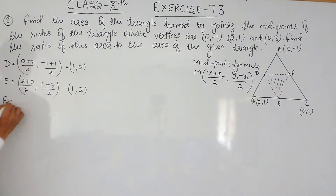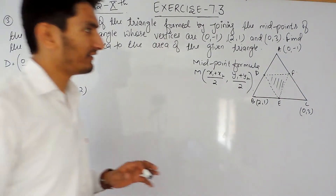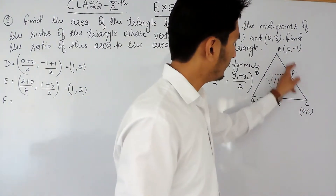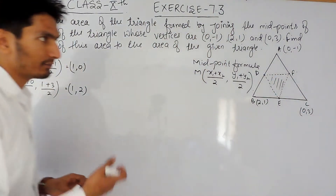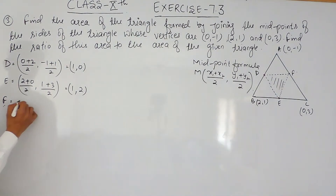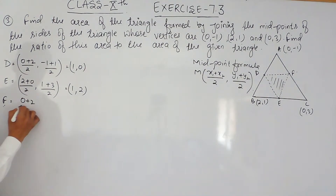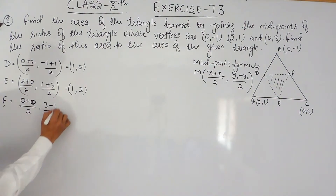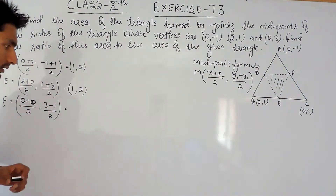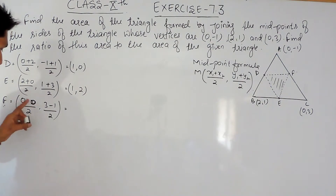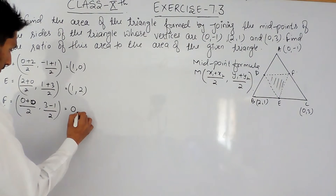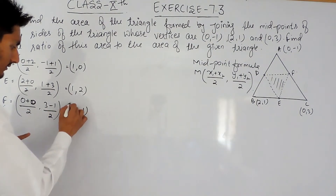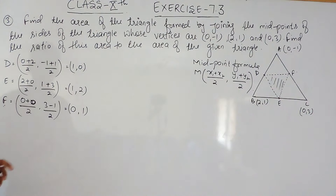Now I have to find the coordinate of F. F is the midpoint of AC. For the x-coordinate: (0 + 0) / 2 = 0. For the y-coordinate: (-1 + 3) / 2 = 2 / 2 = 1. So F = (0, 1). These are the coordinates of D, E, and F.